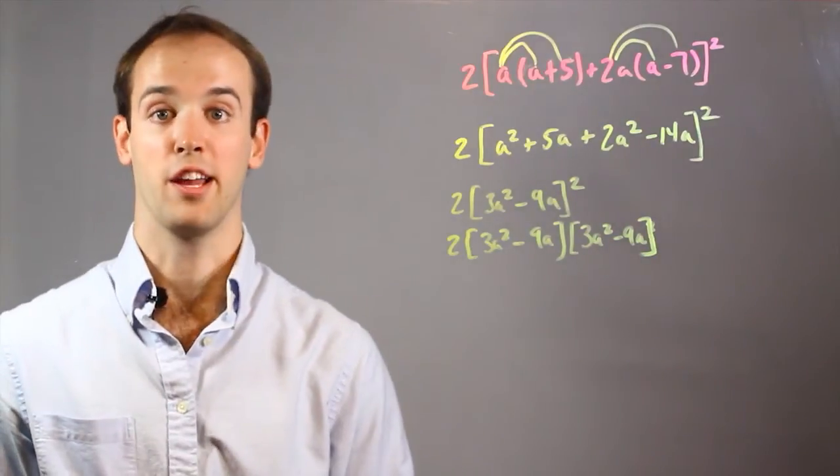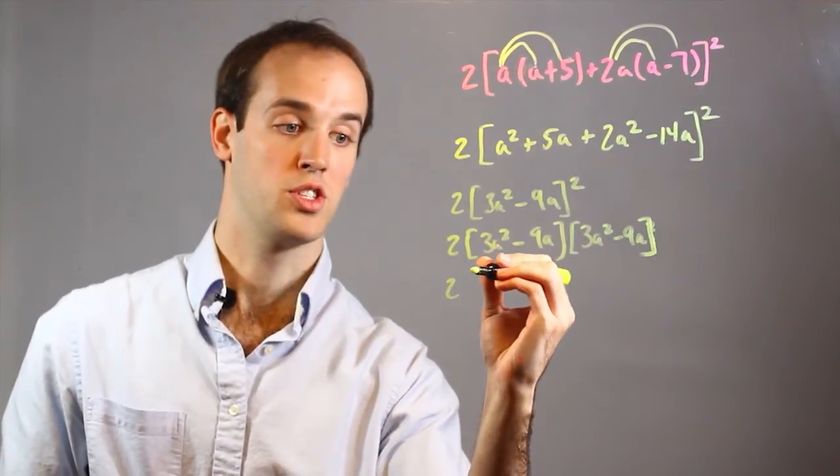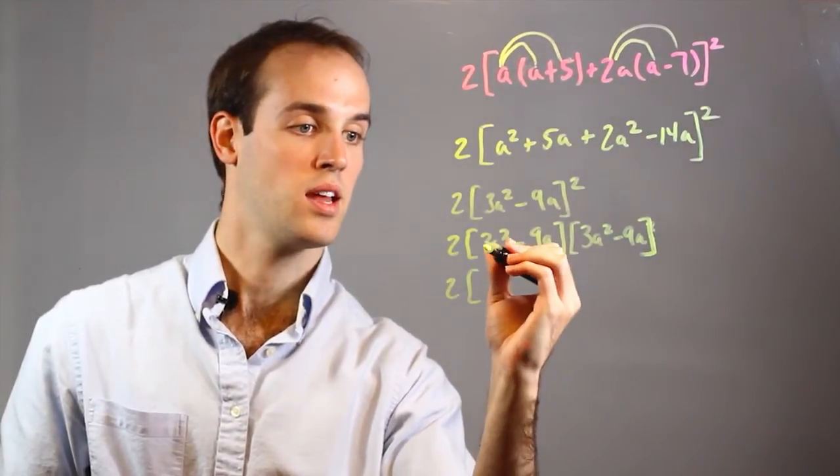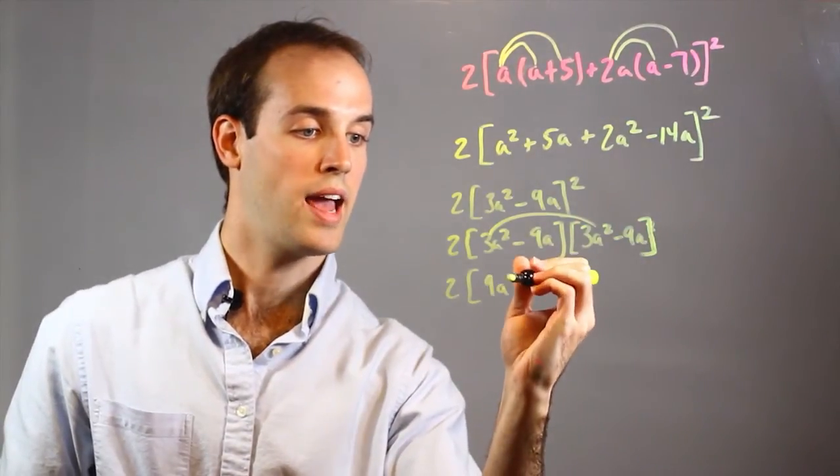And now I can use FOIL to get both of these within one bracket. So this 2 is still on the outside, I haven't messed with it. First, I would multiply these two together, which gets me 9A⁴.